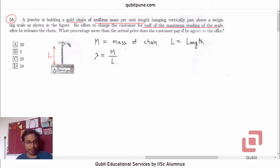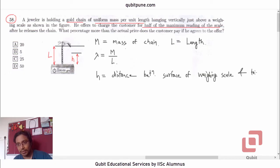We are going to solve this problem by considering one particular instant. Let us say the jeweler has dropped the chain, and let its height be h at some instant. Let h be the distance between surface of weighing scale and top of the chain.